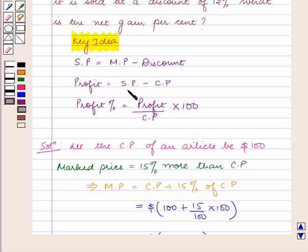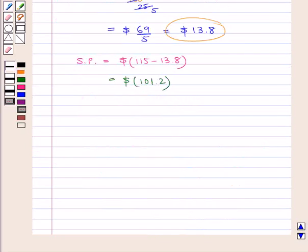Now, as profit is equal to selling price minus cost price, therefore, here profit will be equal to 101.2 minus 100 dollars, which is equal to 1.2 dollars.